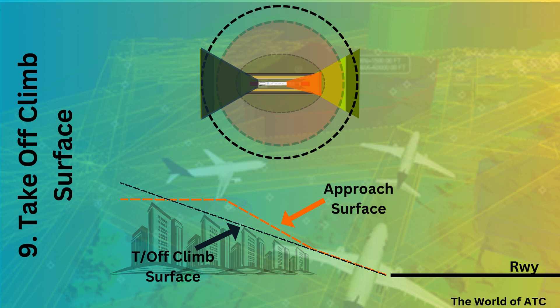Since the take-off climb surface has a slope of 2% till 15,000 meters, and approach surface has three different planes. The first plane has a slope of 2% just like take-off climb, the second plane has a slope of 2.5%, and the third plane has zero slope.